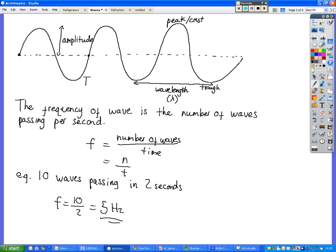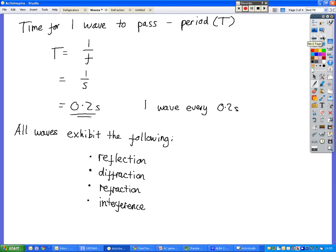From frequency we can also calculate what the period is. The period is the time taken for one wave to pass, not to be confused with the frequency, which is the number of waves in a second. The period is equal to 1 divided by the frequency. So for that same example it's 1 divided by 5, 0.2. So that means 1 wave every 0.2 seconds.